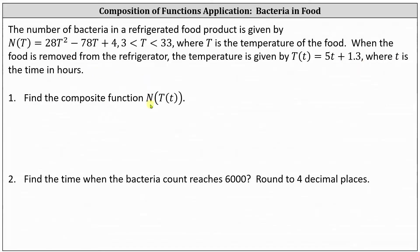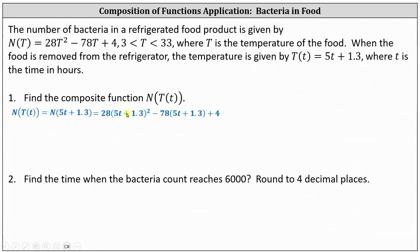Number one: we're asked to find the composition function n of T(t). To begin, we replace T(t) with the function rule 5t plus 1.3. This becomes the input for the function n, which indicates wherever we see T, we now replace it with 5t plus 1.3. This gives us 28 times the square of (5t plus 1.3) minus 78 times the quantity (5t plus 1.3) plus 4.